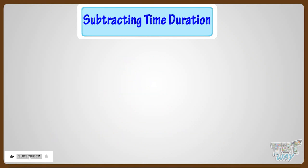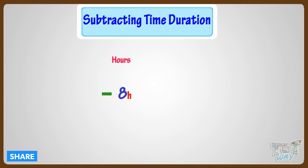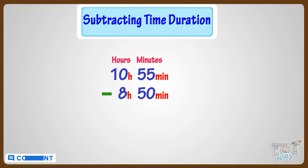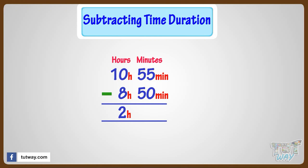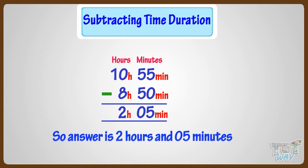Now let's take another example. We have to subtract 8 hours and 50 minutes from 10 hours and 55 minutes. Subtracting hours from hours, that is, subtracting 8 from 10, we are left with 2 hours. Subtracting minutes from minutes, that is, subtracting 50 minutes from 55 minutes, we are left with 5 minutes. So the answer is 2 hours, 5 minutes.